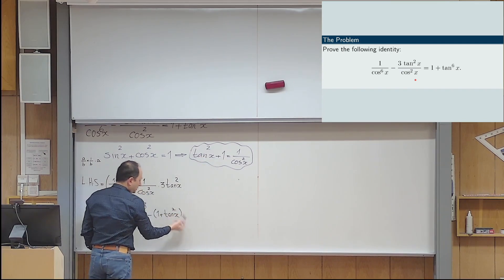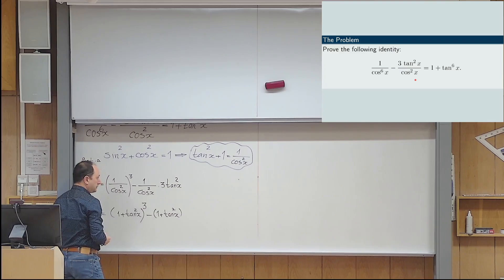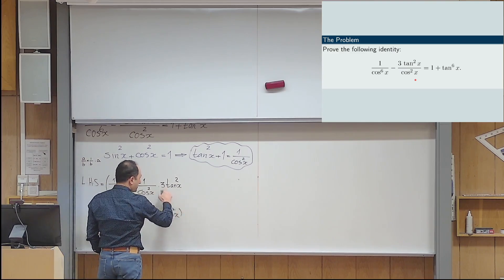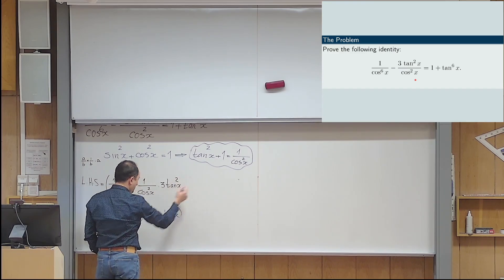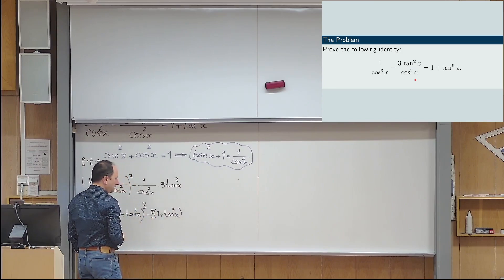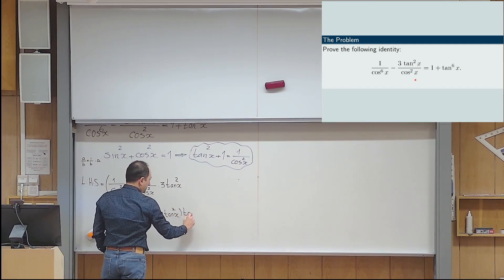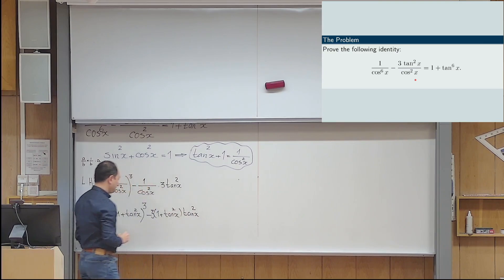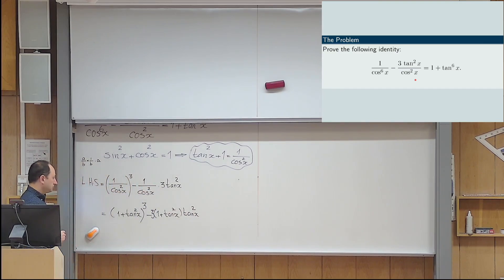Of course, instead of tan x squared plus 1, I wrote 1 plus tan x squared and then multiply it by 3 times tan x squared. So, if you don't mind, let's put the 3 here and the tan x here, tan x squared here. Okay.